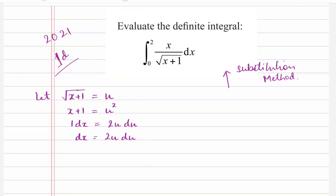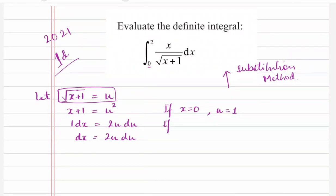When we substitute, we also need to change the limits. If x equals 0 and we substitute that value in, we get u equals root 1, which is 1. And if x equals 2, that gives us u equals root 3. Those are our new limits.